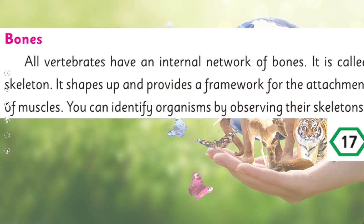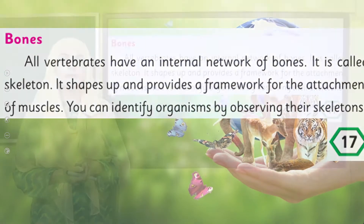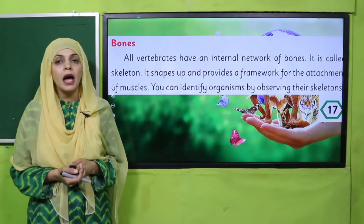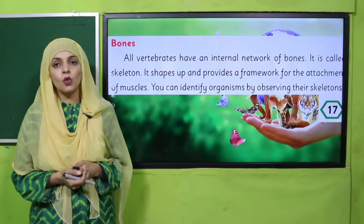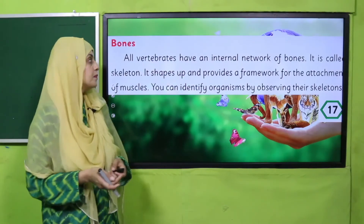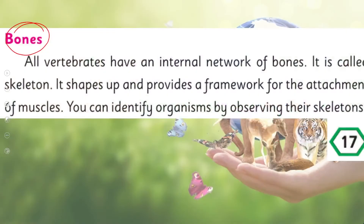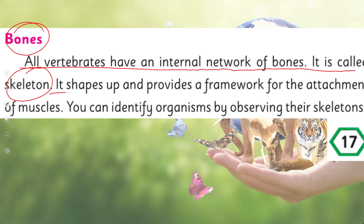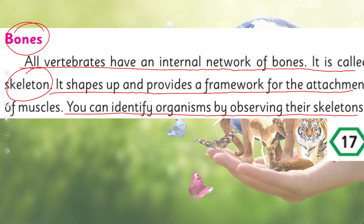Put your fingers where I will read. Bones: all vertebrates have an internal network of bones — it is called a skeleton. It shapes up and provides a framework for the attachment of muscles. You can identify organisms by observing their skeletons.